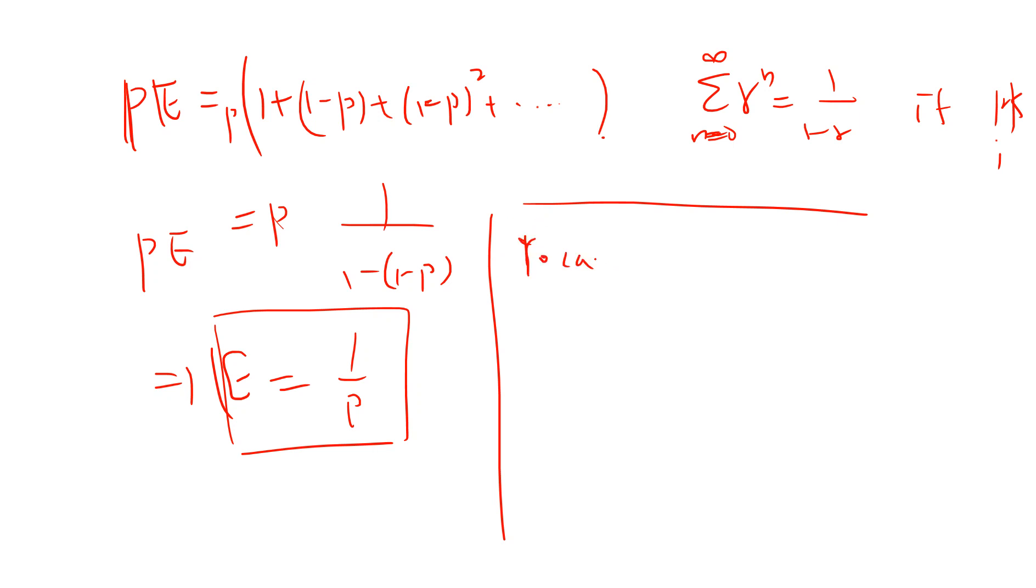You can prove the expectation value of n continuous successes. That means how many times you want to get two consecutive sixes, or n continuous successes. The expectation value is just 1/p, 1/p², and keep going to 1/p^n. One can generalize this result into this formula.